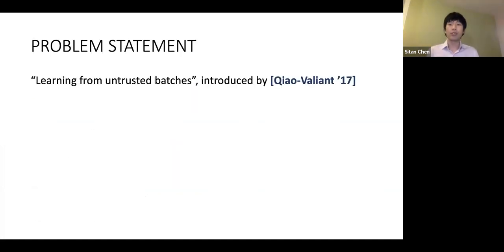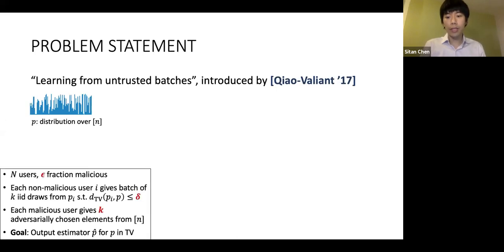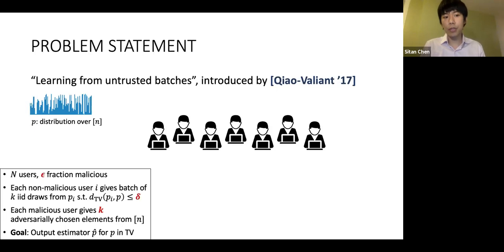This particular problem was introduced by Chow and Valiant a couple years back, and they called it learning from untrusted batches. Let me formalize what I described with some notation. We have some discrete distribution p that we want to learn, and we get access to p as follows. We have some collection of N users, some small but constant fraction epsilon of whom are malicious.